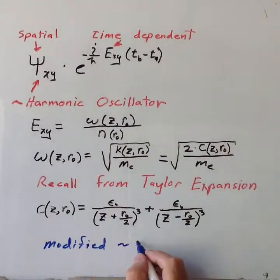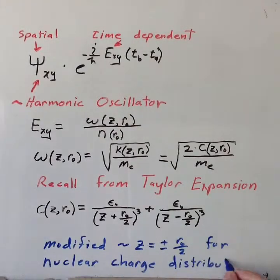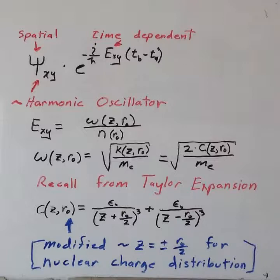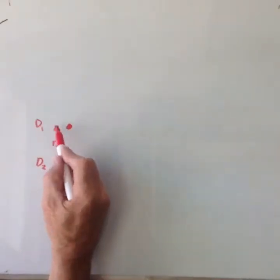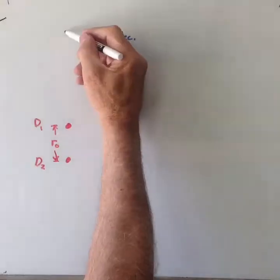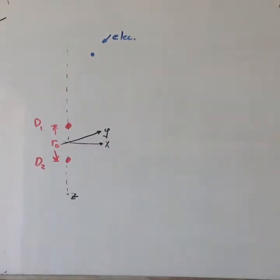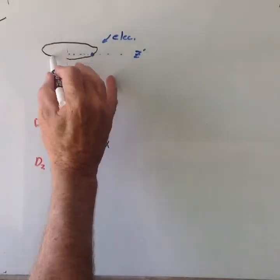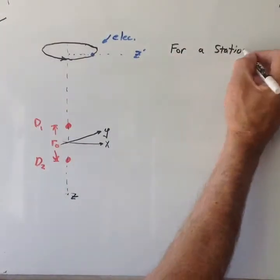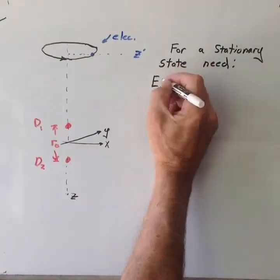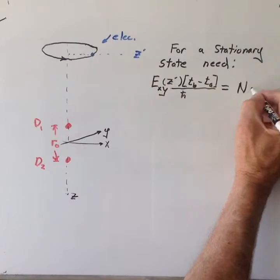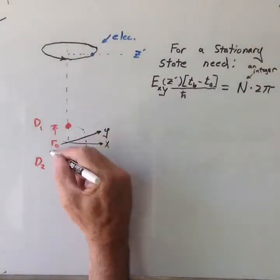We left off with a time-dependent wave function for the one electron state that was not time-independent. We show here a sketch of the electron orbit at position z prime. We choose z prime so that the time-dependent phase factor is some integer n times 2 pi. We then choose the next point, z double prime,